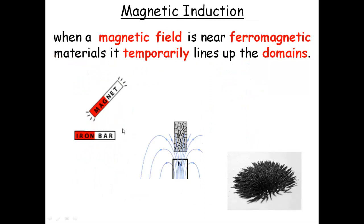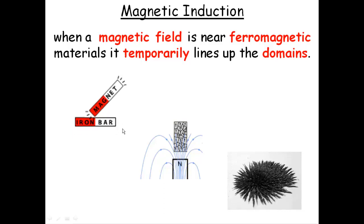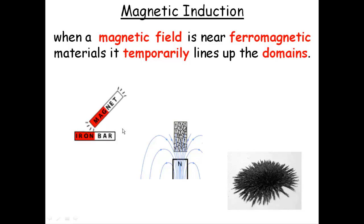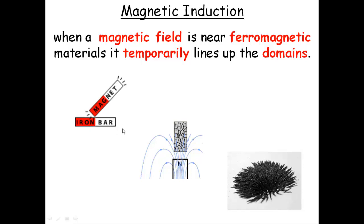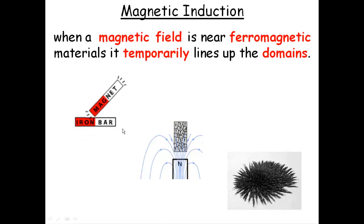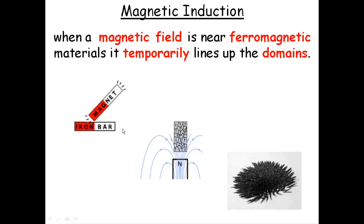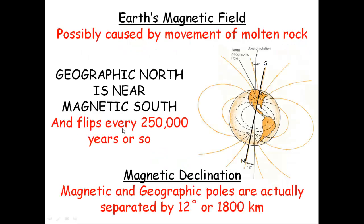Sometimes we can temporarily turn something to a magnet. We temporarily line up those domains, make electrons start spinning in the same direction, but eventually they'll fail. And you simply do that by putting it in another magnetic field. And when you remove that other magnetic field, it may go back.